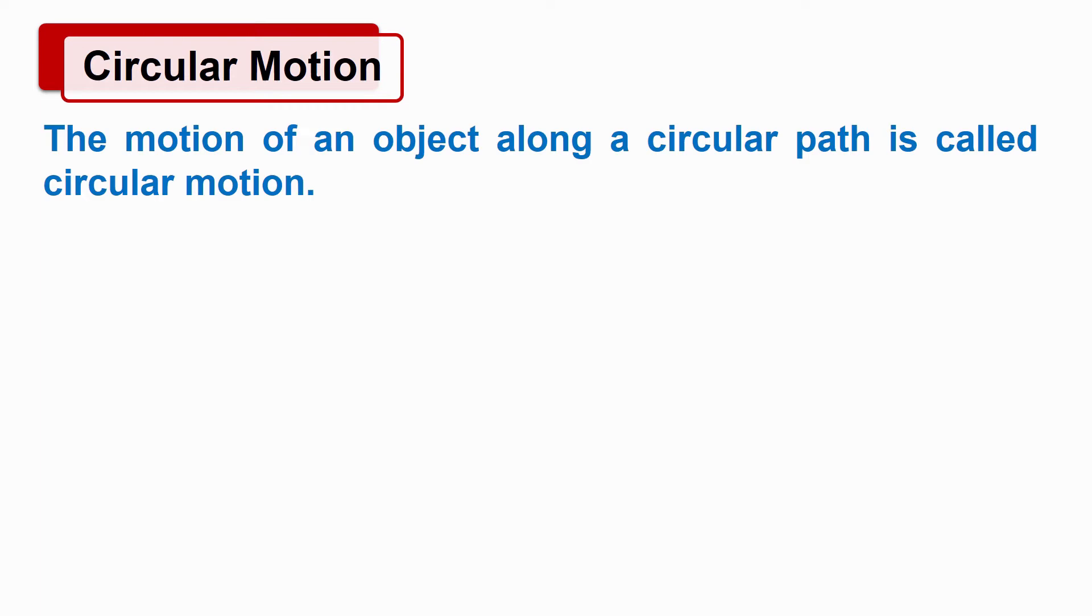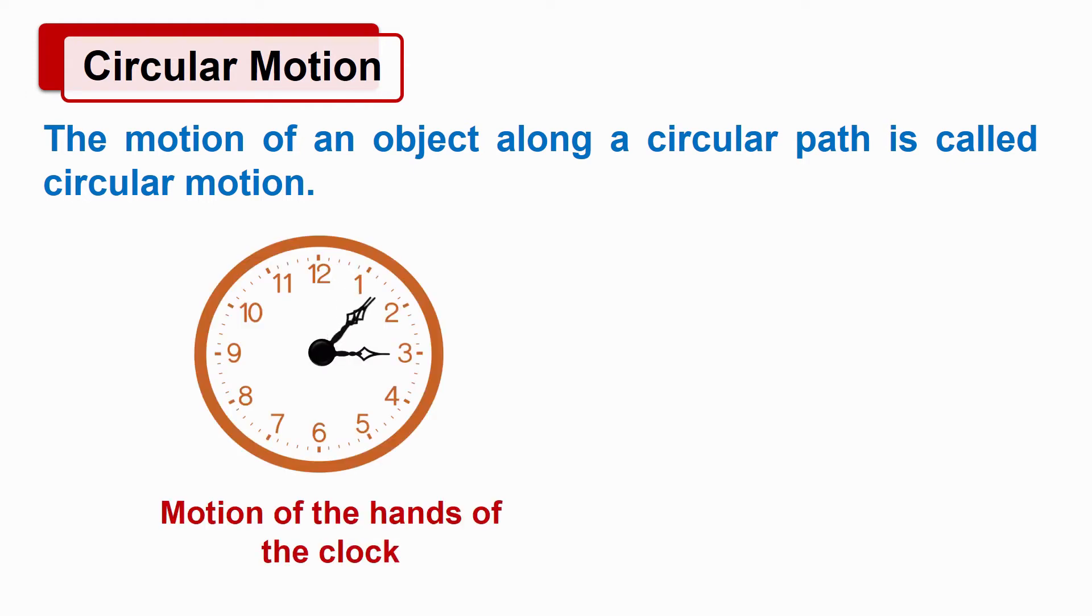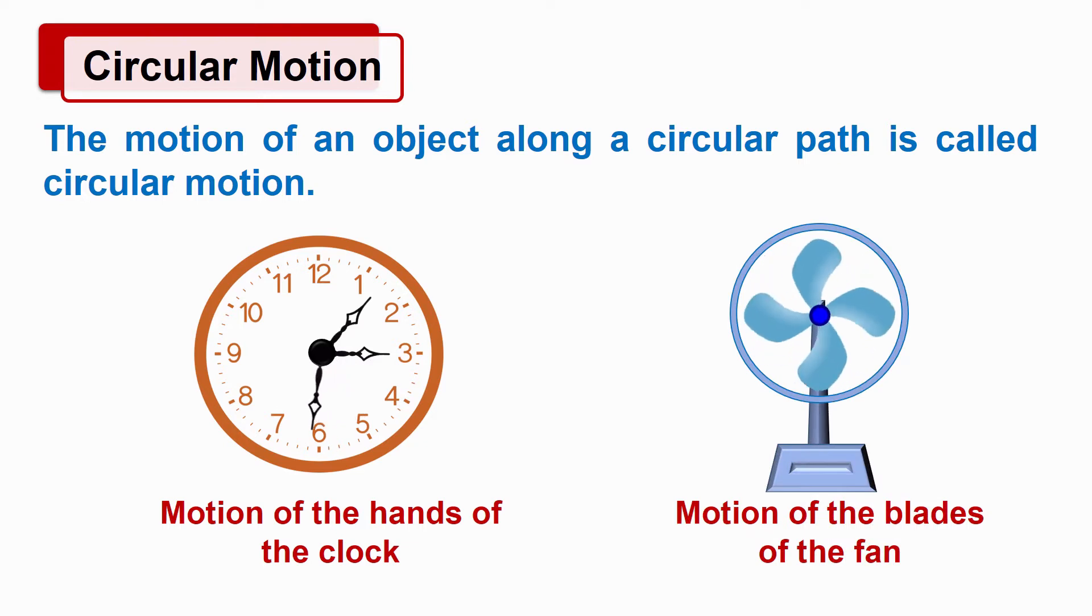The motion of an object along a circular path is called circular motion. Examples: motion of the hands of the clock, motion of the blades of the fan, etc.